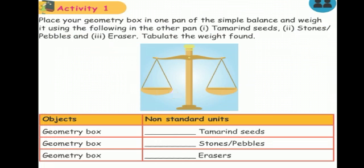Go to the next one. This is Activity 1. Place your geometry box in one pan of the simple balance and weigh it using the following in the other pan. Using tamarind seeds, stones or pebbles, and eraser. Tabulate the weight found. Here they give a simple balance. We take a simple balance.